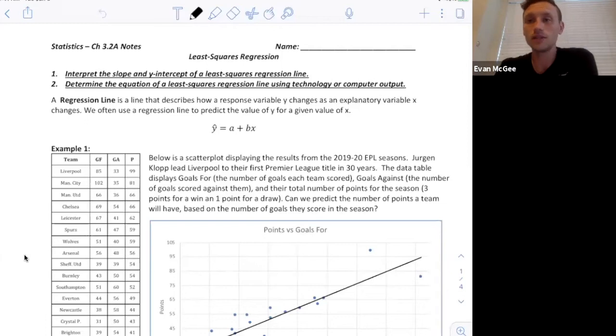This is a 3.2a video. We're going to talk about least squares regression and we are going to use some information from the Premier League to figure out how to interpret the slope and y-intercept of a least squares regression line and how to determine the equation for a least squares regression line.